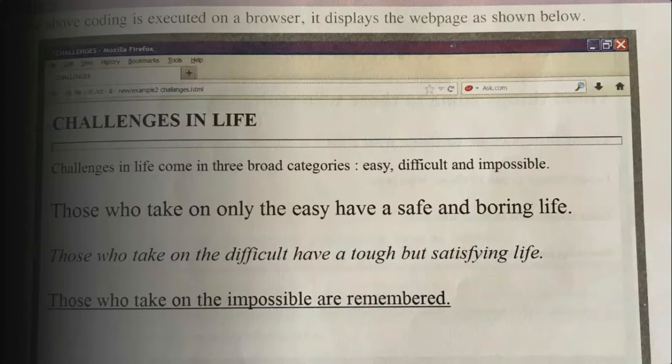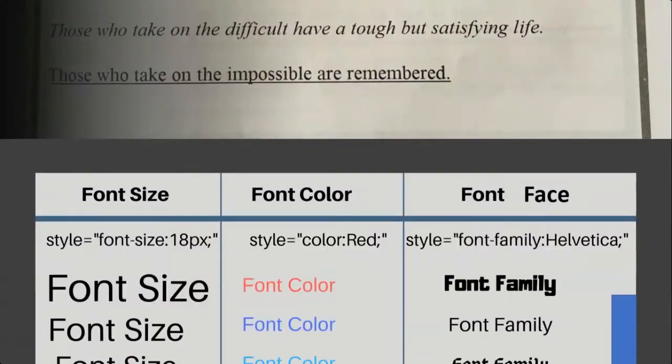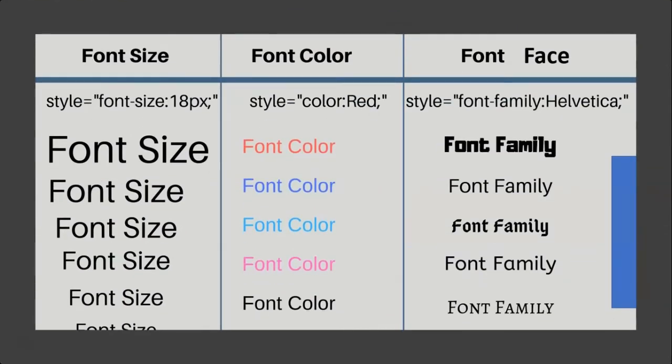The FONT tag is used to specify the style, size, and color for character phrases or a range of text. The attributes of the font tag are face, size, and color. Face: fonts displayed in the browser can be changed using the face attribute. Size: the size attribute indicates the size in which the font is to be displayed. Color: this attribute is used for changing the color of the text.